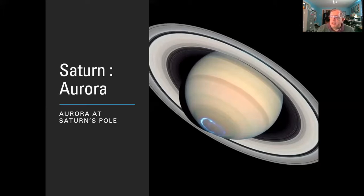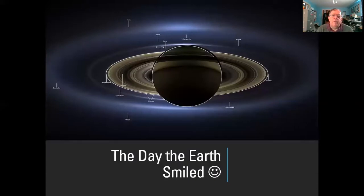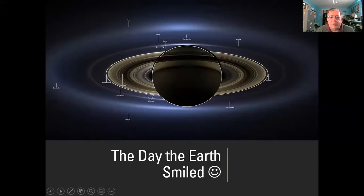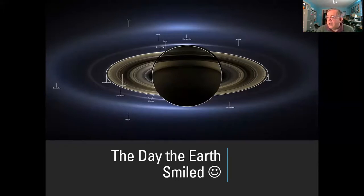The Cassini spacecraft performed a special maneuver to create an eclipse for itself, going around behind Saturn so the sun was completely blocked out. That amazing illumination angle produced this marvellous picture of Saturn's rings, with many of the moons labelled — over to the left we have Enceladus, and in the picture we can see the Earth and its moon, and up here we have Mars. They told us here on Earth they were doing this and called for everyone to turn their faces to the sky and smile — so this is a photograph of the whole population of the Earth in one pixel, called 'The Day the Earth Smiled.'